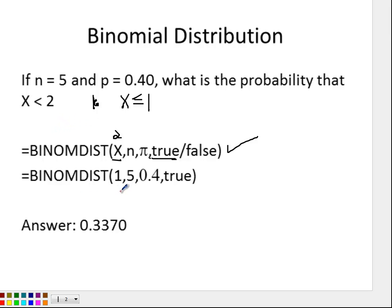What you can do is trick Excel. Everything less than 2 is the same thing as saying everything less than or equal to 1. If it's less than 2, then it has to be equal to 1 and everything less than or equal to 1. So instead of having 2, put 1 — it's the same concept. Once you do that and plug the command into Excel, you get 0.3370.